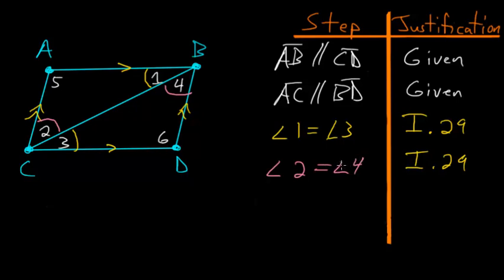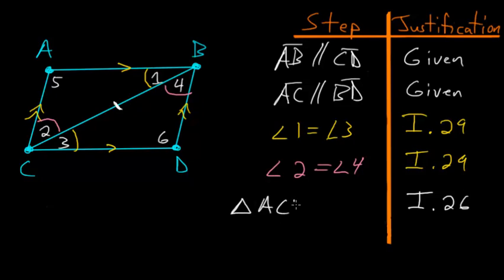Now notice that triangles ACB and DBC are equal because they share side BC in common, and the angles on either side of that shared side are equal respectively. We essentially have the Angle-Side-Angle theorem here, which is Book 1, Proposition 26. So triangle ACB equals triangle DBC, and because these two triangles are exactly equal, the parallelogram is split exactly in half by line BC.